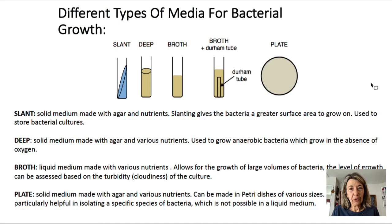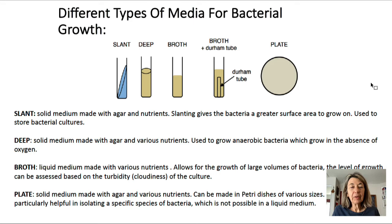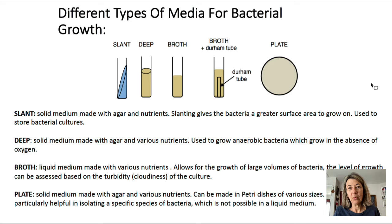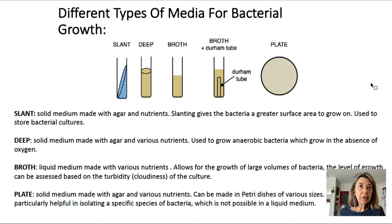Anaerobic bacteria grow well at the very bottom of a deep tube because little oxygen can penetrate that far. Liquid or broth medium is used when you need a large quantity of bacteria — for example, in pharmaceutical industry or food preparation using fermentation tanks, which are large-scale containers holding large volumes of broth. The Durham tube, a small tube inside the broth tube, captures any gas produced and helps identify or classify the type of fermentation bacteria perform.